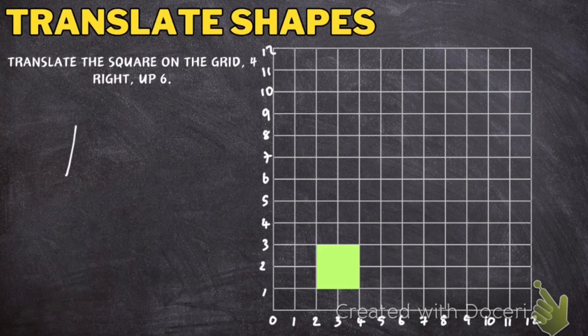In this question here it says translate the square 4 right up 6. So it needs to go to the right and then it needs to go up. So it tells us in the question to go 4 right. So what I'm going to do is I'm going to pick a point. So I'm going to pick this corner here and I'm going to count 4 squares to the right.